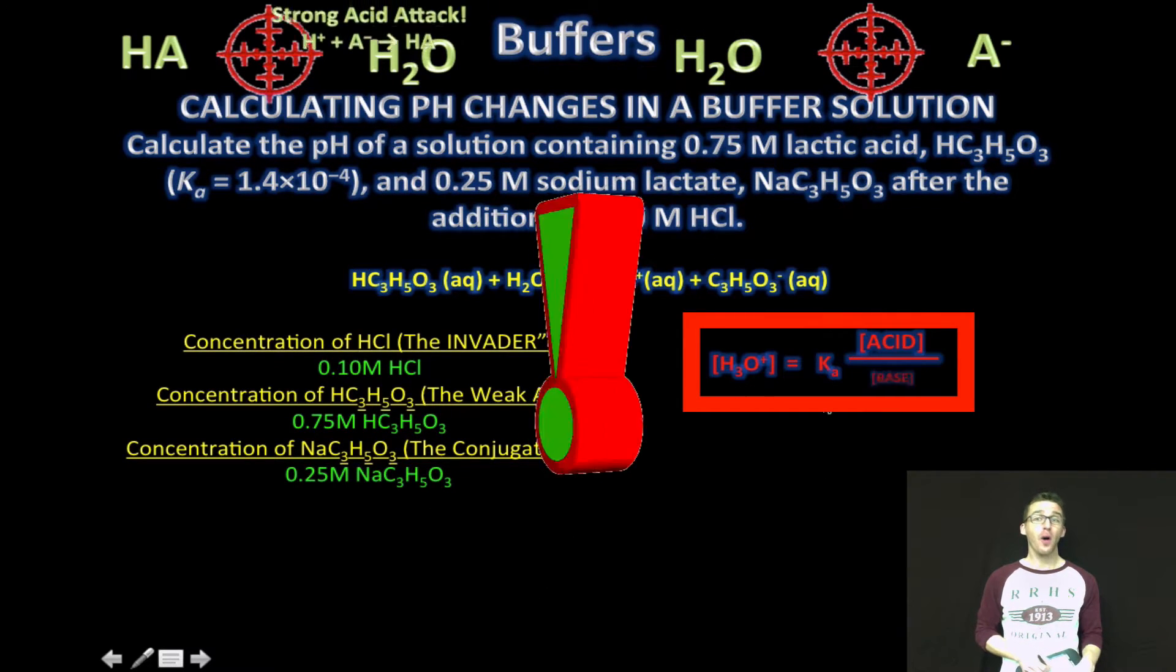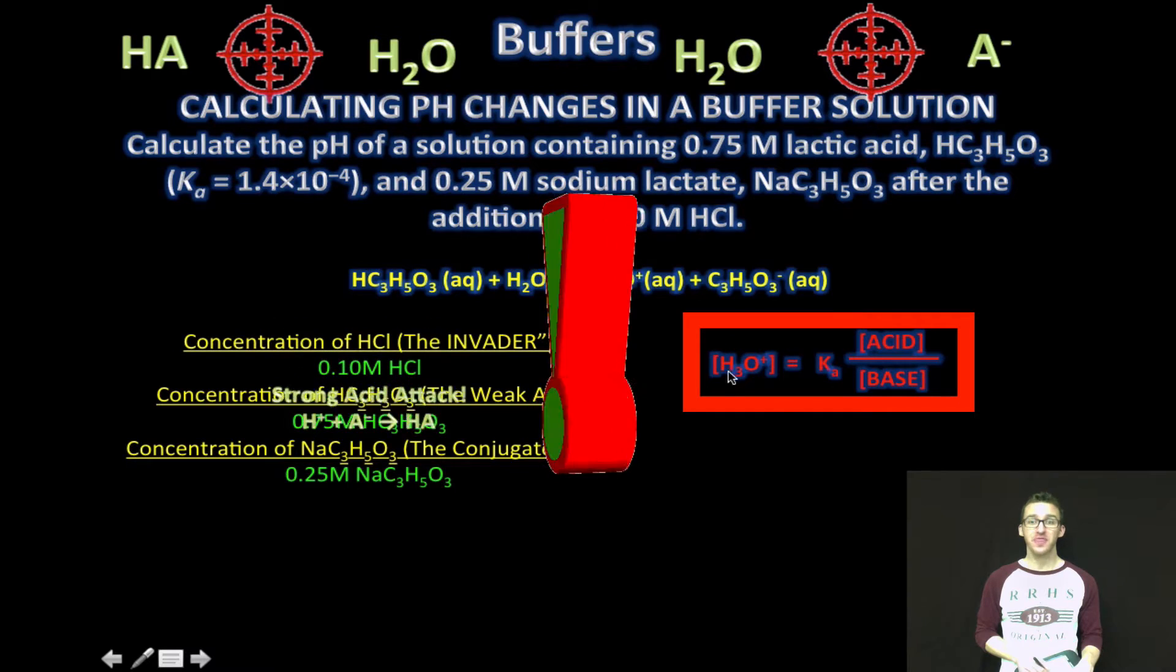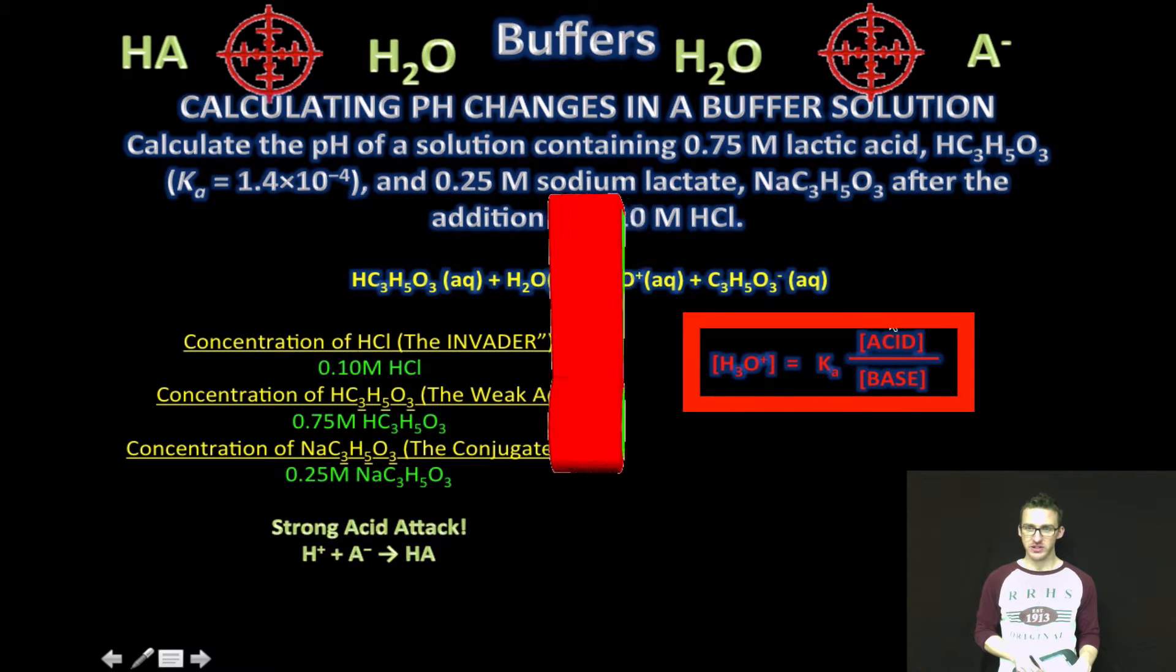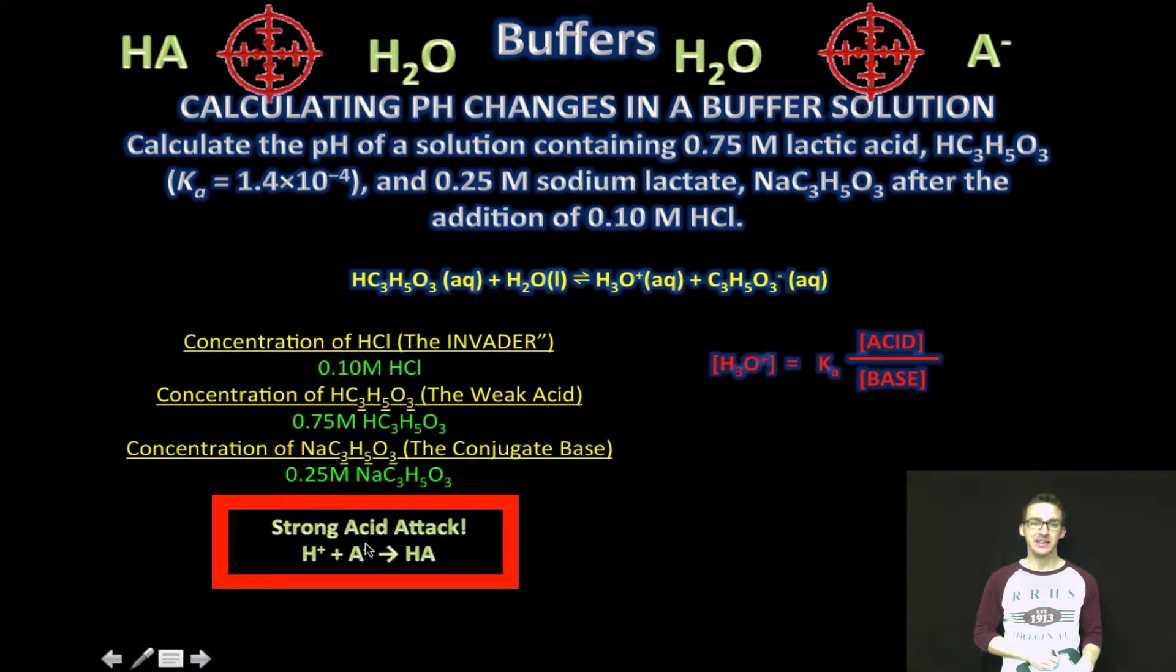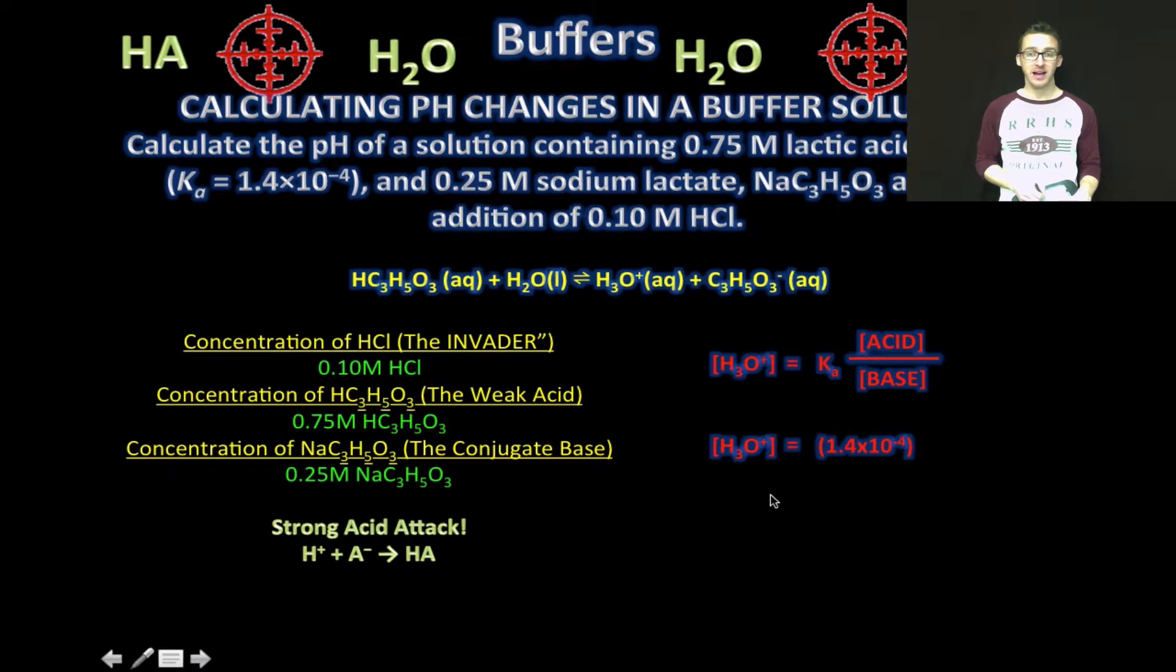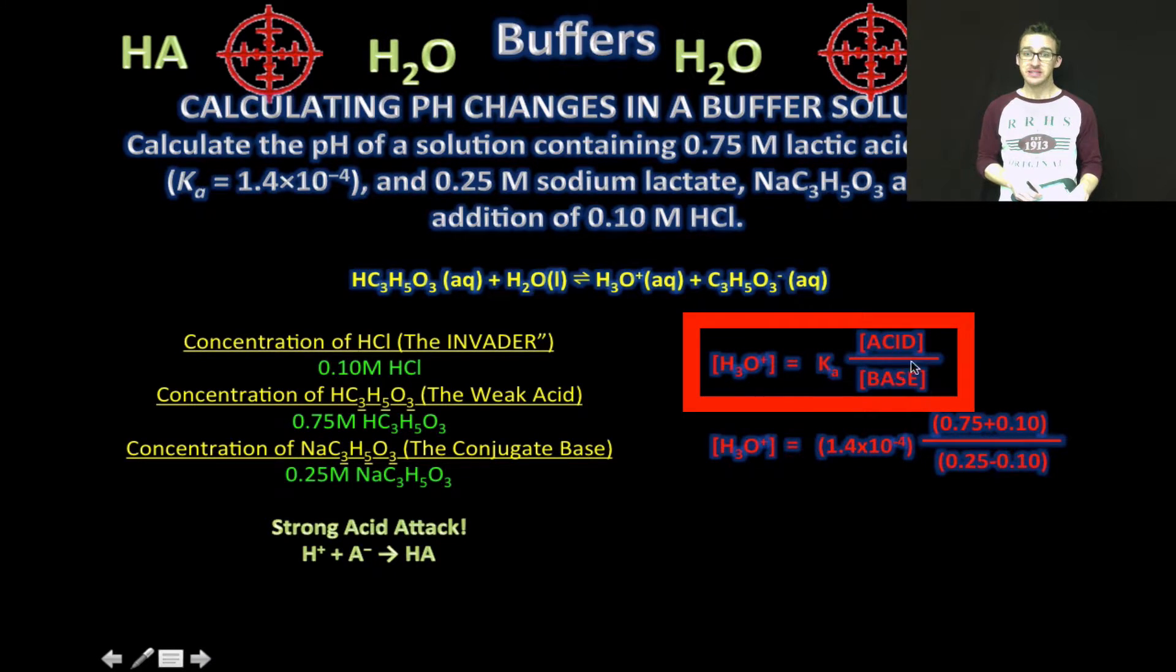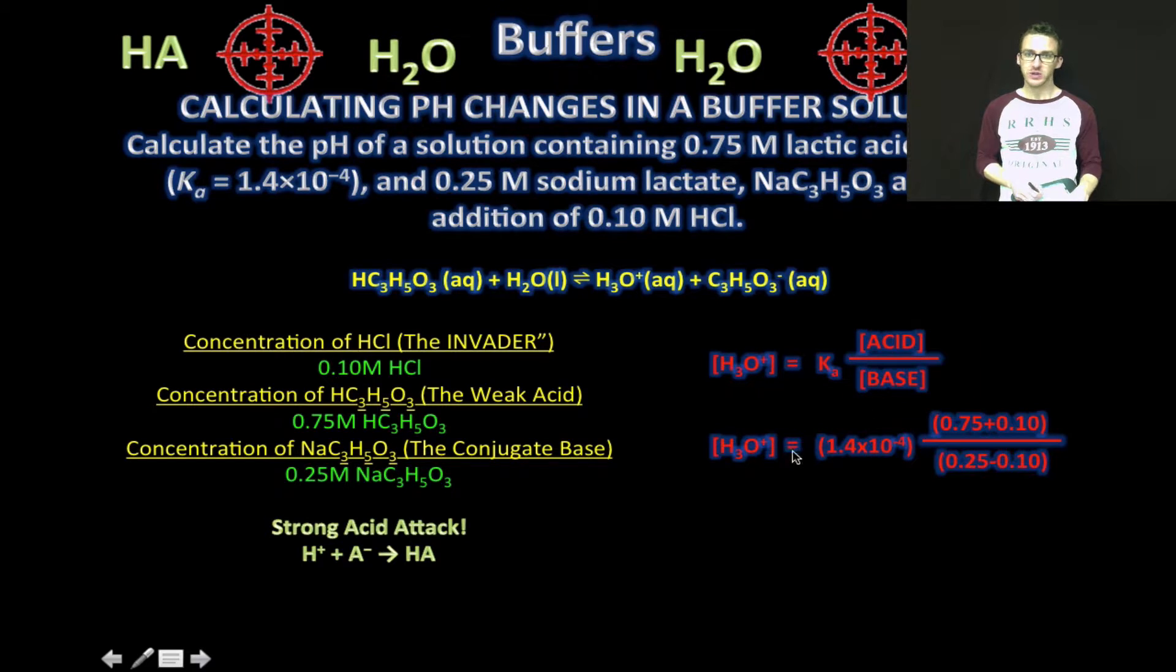So for all buffer problems, think about this equation. And recognize that because it is a strong acid that we are adding, it is our conjugate base soldier that's going to sacrifice itself to form more weak acid. So as you try to calculate the change in the pH, recognize that it's still this equation. So we're going to use the Ka of lactic acid.